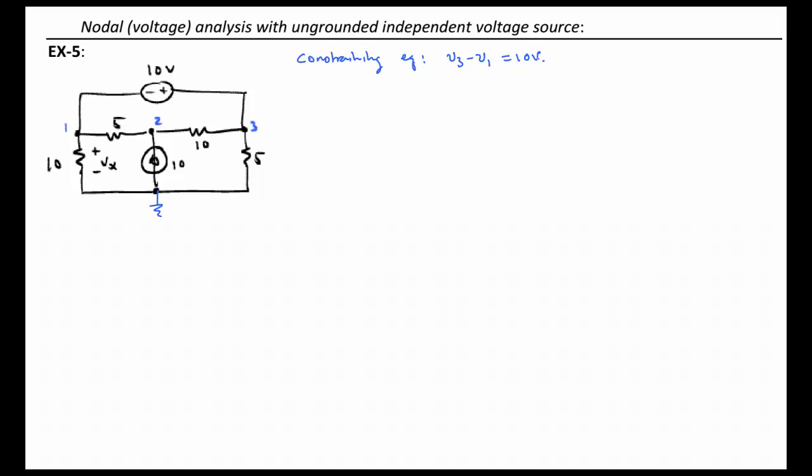We don't know what either V1 or V3 is, but we know that it constrains it. Now, let's go ahead and try to just approach this problem like we would for any other nodal problem. We're going to encounter a problem at some point. Let's start at node 2, because I know that one's not going to cause a problem.